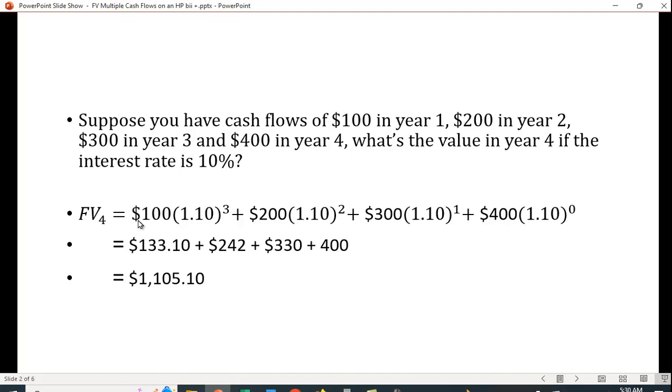Well, the first cash flow goes for three time periods, the second for two, et cetera. We simply find the future value of each and we add them up and we get a value of $1,105.10.